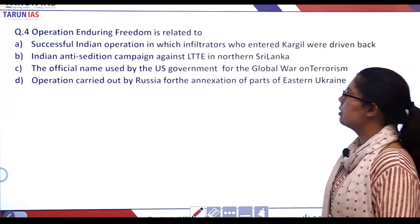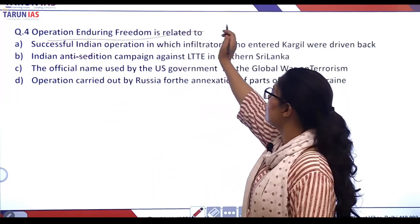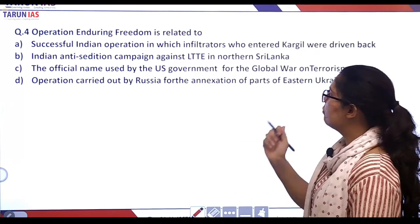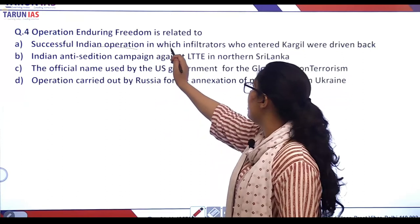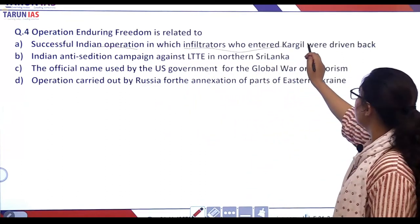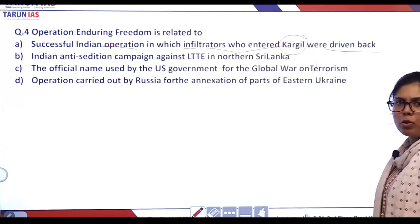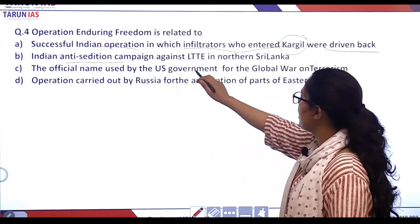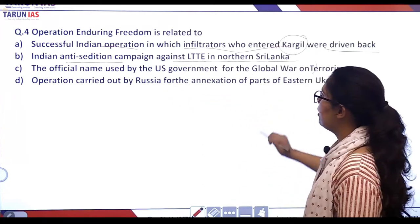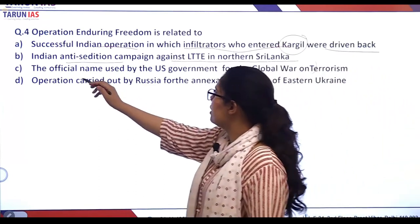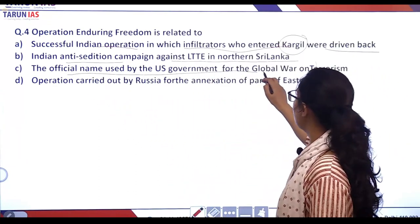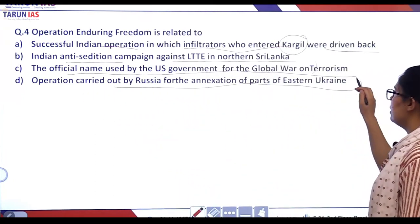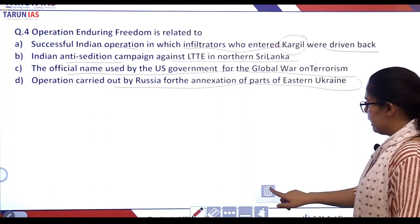The next question: Operation Enduring Freedom is related to — let's see the options. Option A: the successful Indian operation in which infiltrators who entered during the Kargil War were driven back — that was Operation Vijay. Option B: Indian anti-sedition campaign against the LTTE in northern Sri Lanka. Option C: the official name used by the US government for the global war on terrorism. Option D: an operation carried out by Russia for the annexation of parts of eastern Ukraine.